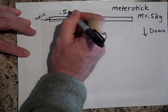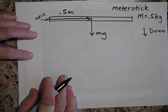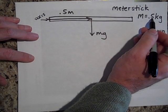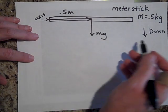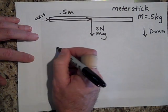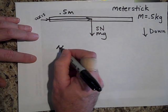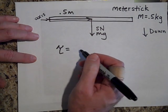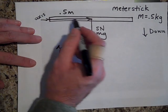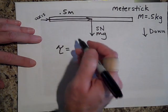The lever arm is this distance. That'd be a half of a meter. The meter stick is a very massive meter stick. It's a half a kilogram, or that would be five newtons. So the net torque right now is R cross F. Now how much of F is perpendicular to R? All of it.